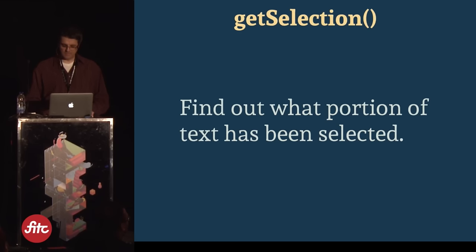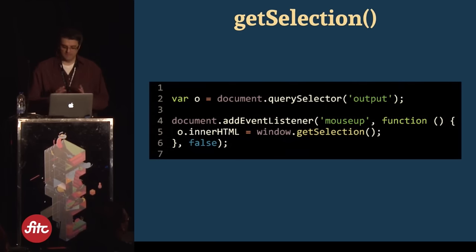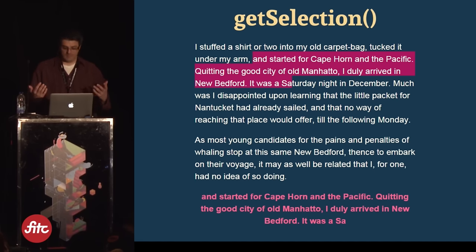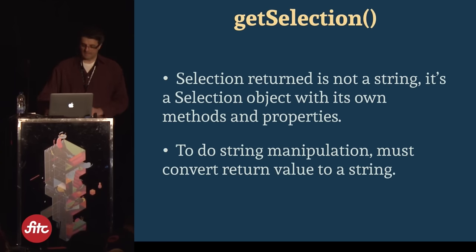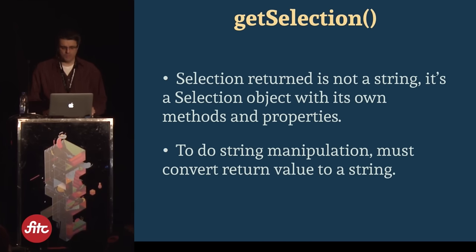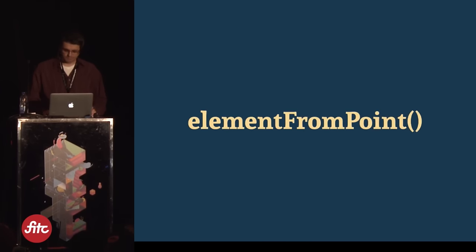Here's getSelection. This lets you find out what portion of text has been selected by the user. On mouseup, you call window.getSelection() and can display or use the selected text. The selection return value is not a string — it's a selection object with its own methods and properties. To do string manipulation with it using standard JavaScript methods, you need to convert it to a string first.